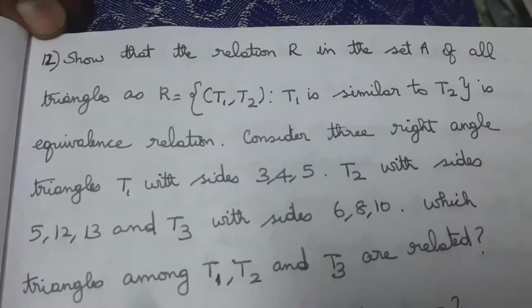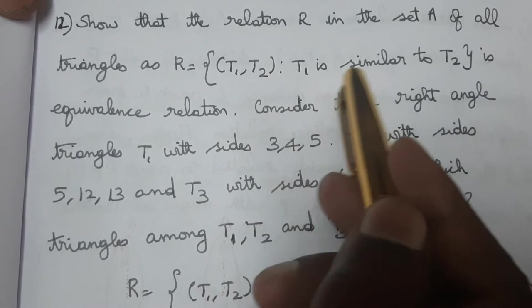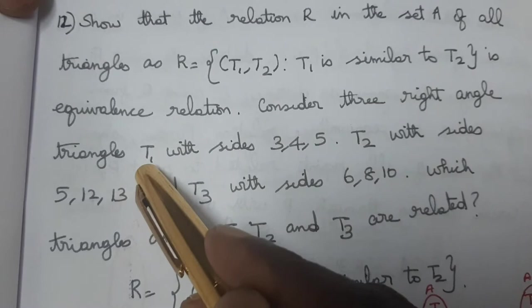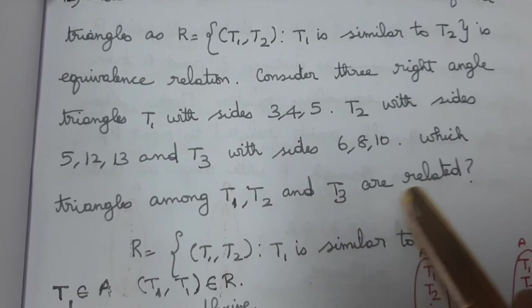Exercise 1.2. Show that the relation R in the set A of all triangles as R equal to {(T1, T2) such that T1 is similar to T2} is an equivalence relation. Consider three right-angle triangles: T1 with sides 3, 4, 5; T2 with sides 5, 12, 13; and T3 with sides 6, 8, 10. Which triangles among T1, T2, and T3 are related?